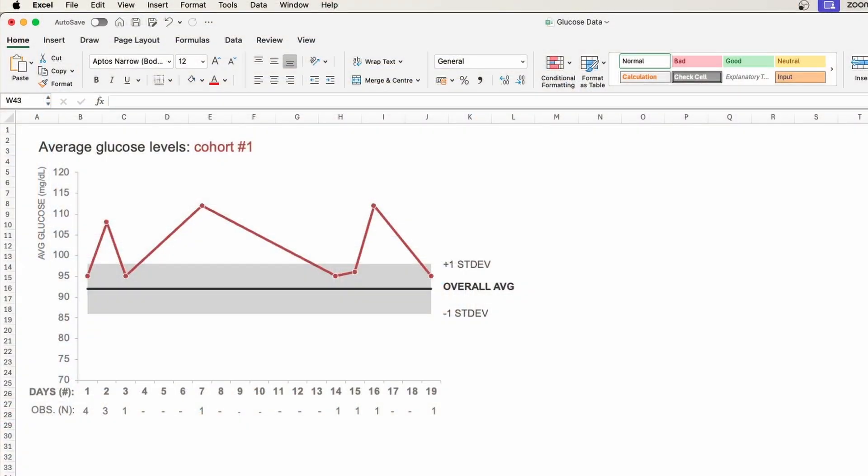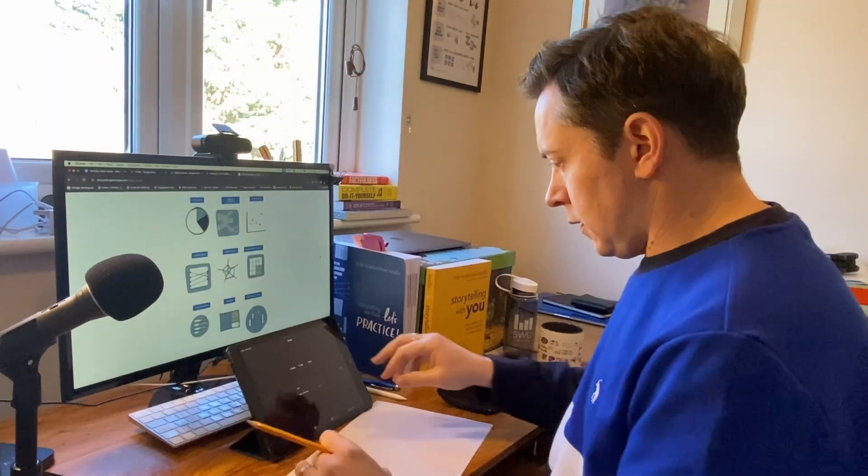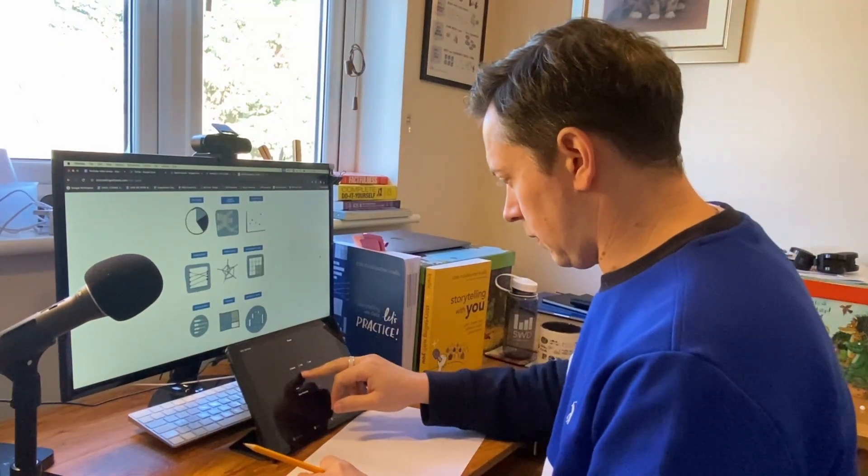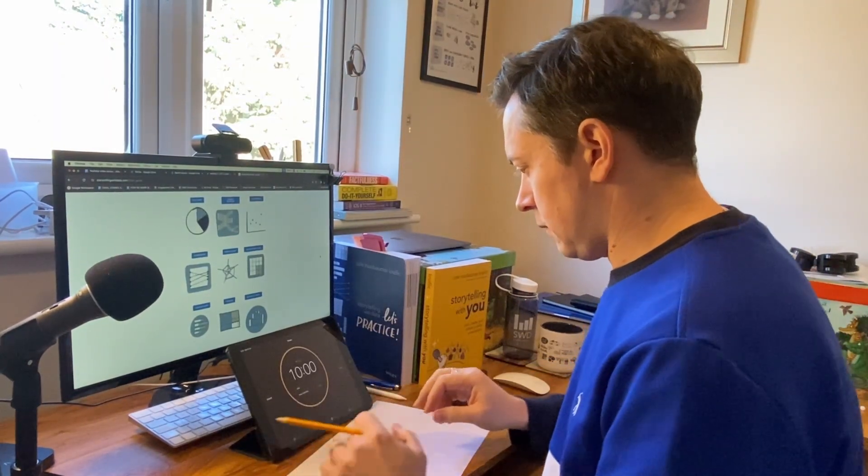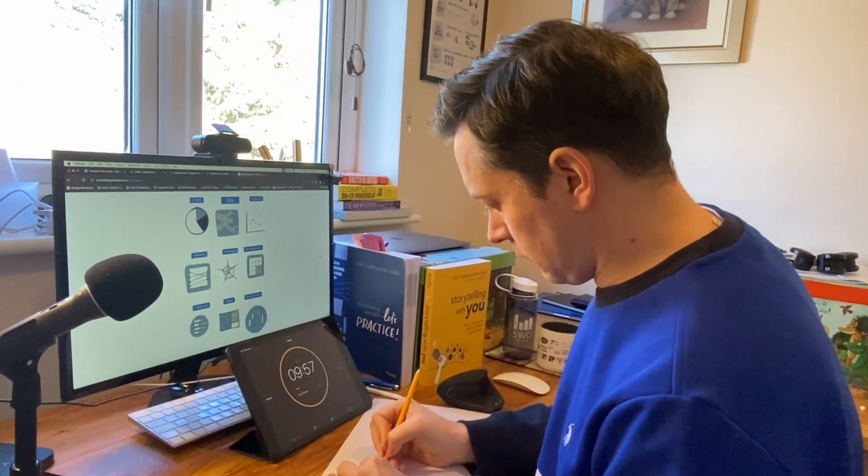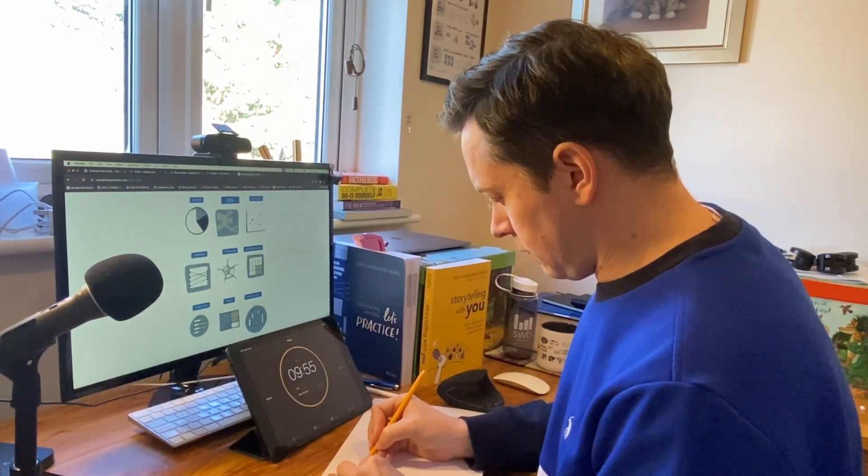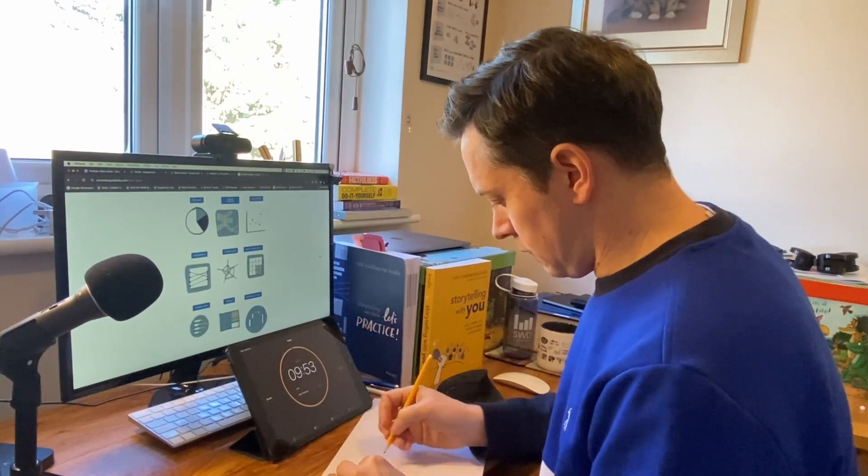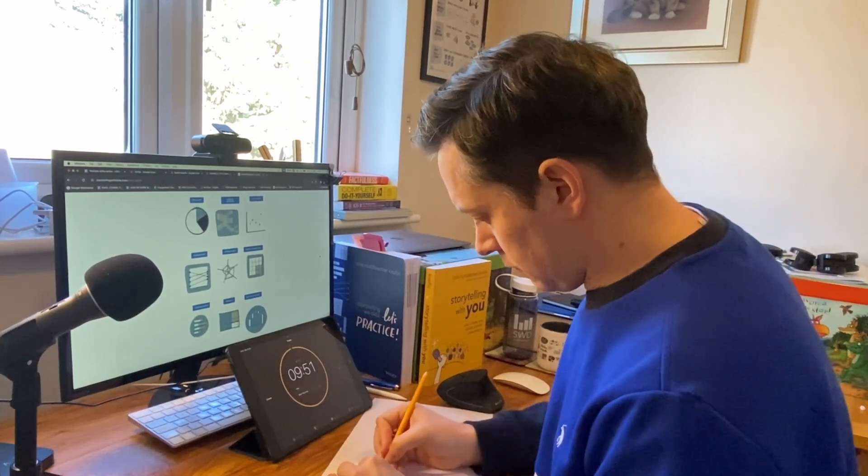The next time you're asking yourself which chart should I choose, set a timer for between 5 and 10 minutes and just sketch out all the possible ideas from that set of fairly common standard chart types. Then, at the end of that process, take a look at your ideas, analyze the pros and cons of each, or even better yet, get some feedback and some suggestions from friends or colleagues as well.